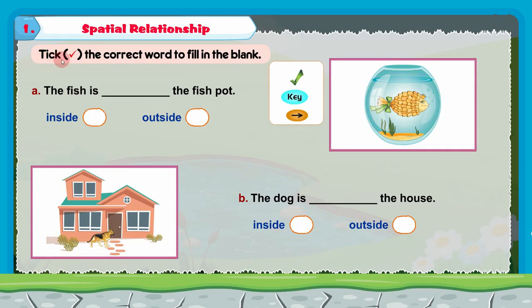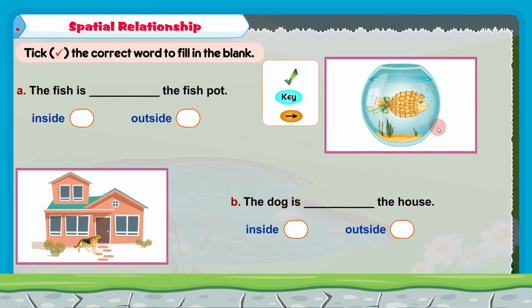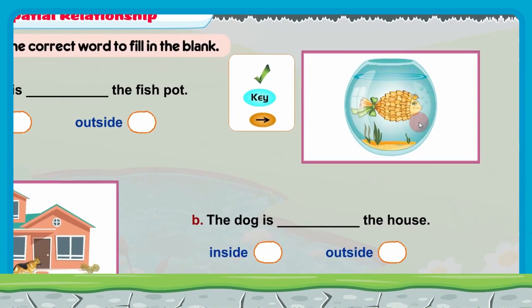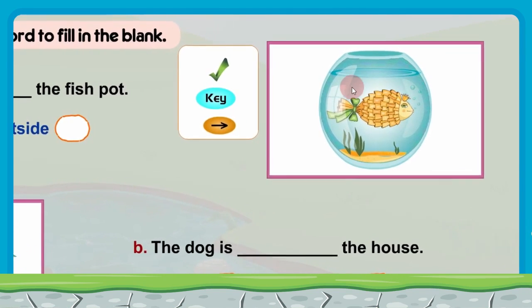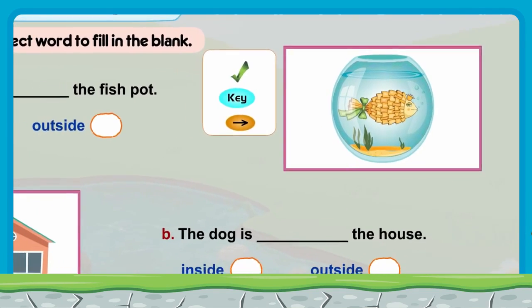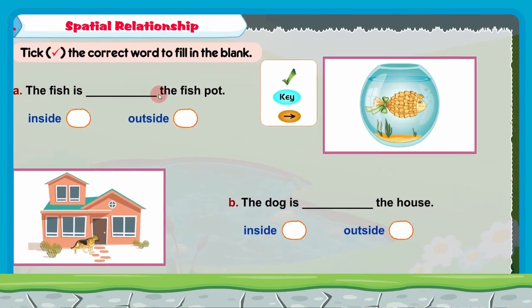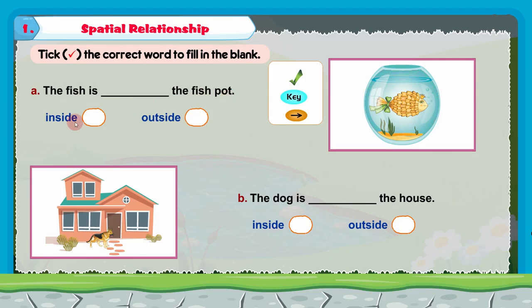Let us read the heading: take the correct word to fill in the blank. Here there is an incomplete sentence with a blank in between — we have to write the correct answer with the help of the picture. You can see a fish pot with water inside and there is a fish in the fish pot. The fish is inside the fish pot. So the sentence is: the fish is dash the fish pot — it is inside. We will tick the inside option. The fish is inside the fish pot.